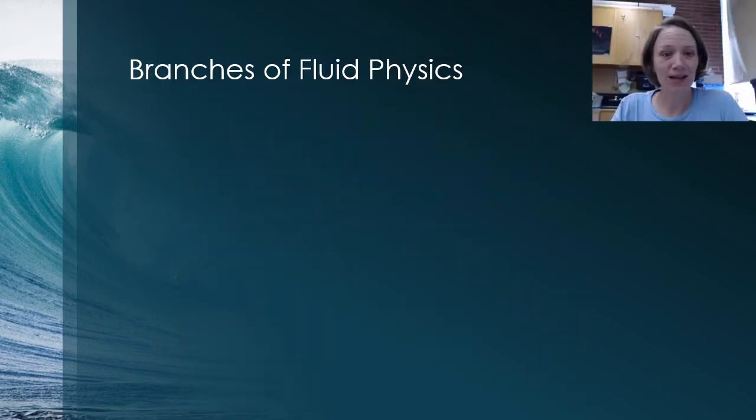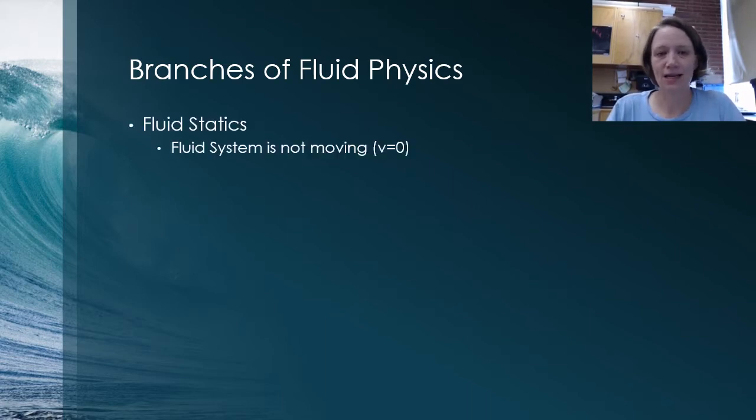As I previewed in that last slide, there are actually two different branches of fluid physics. The first is called fluid statics and fluid statics means that the fluid system is not moving. That's what that word static means, staying still. So in other words, the system as a whole has a velocity of zero.